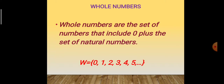You are already aware of whole numbers. Whole numbers are the set of numbers that include 0 plus the set of natural numbers. W = {0, 1, 2, 3, 4, 5, ...}. These are also rational numbers.